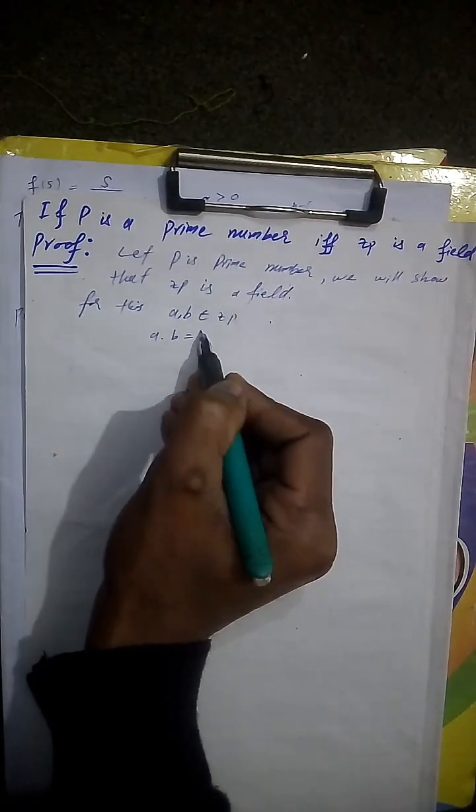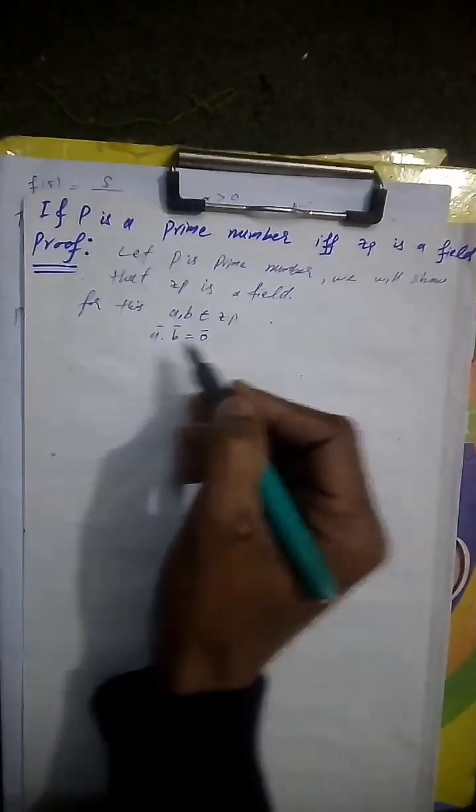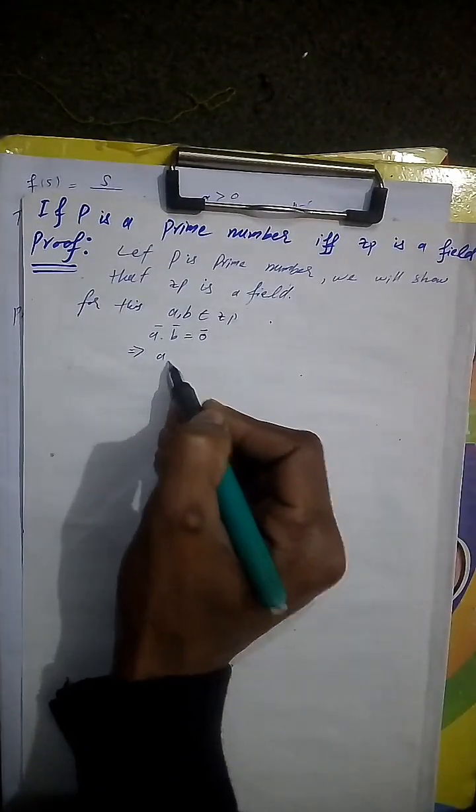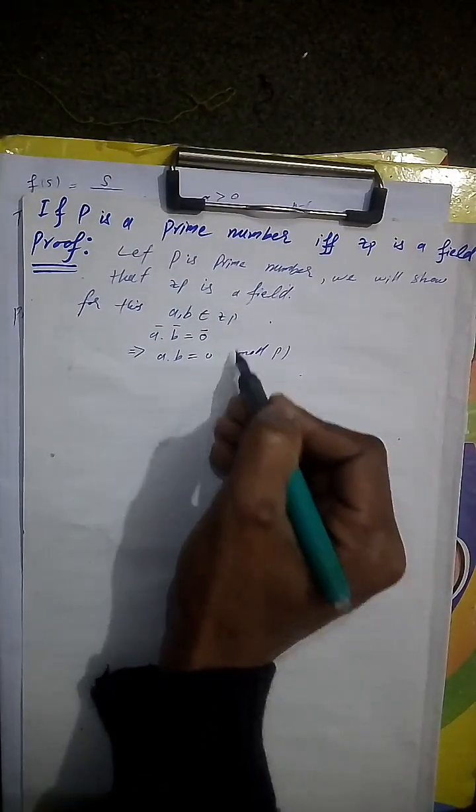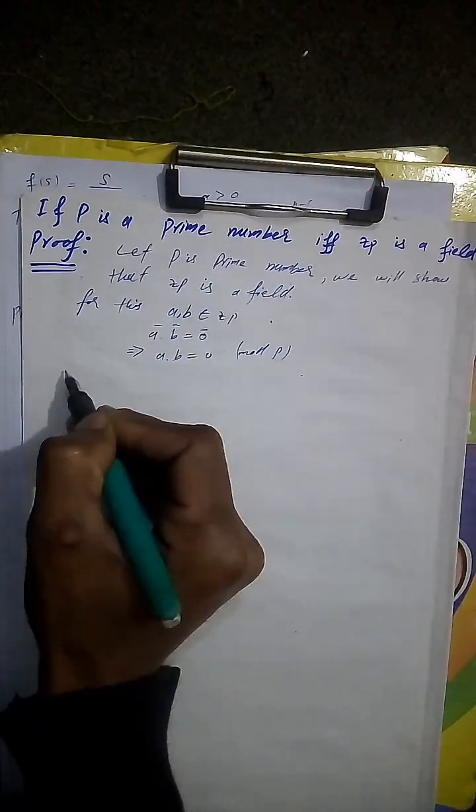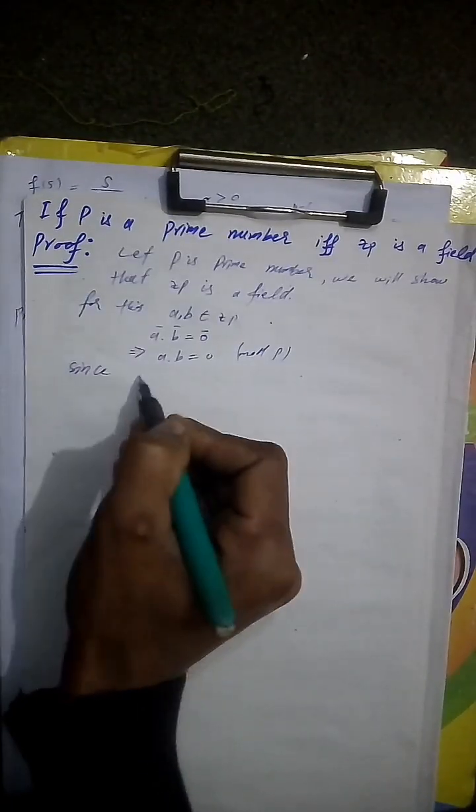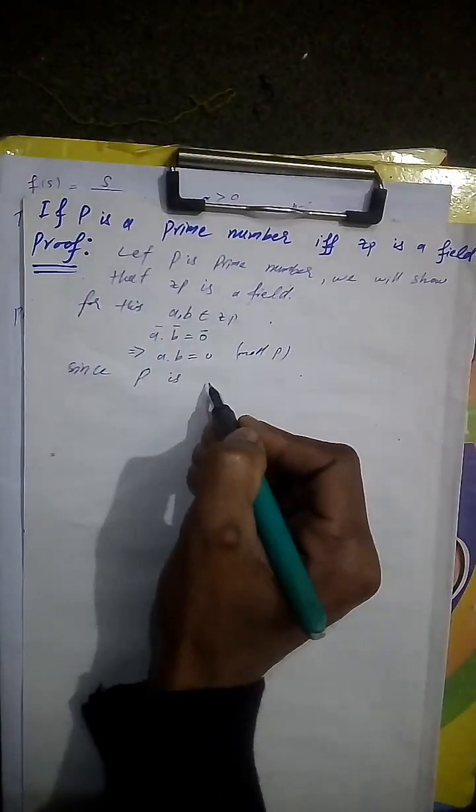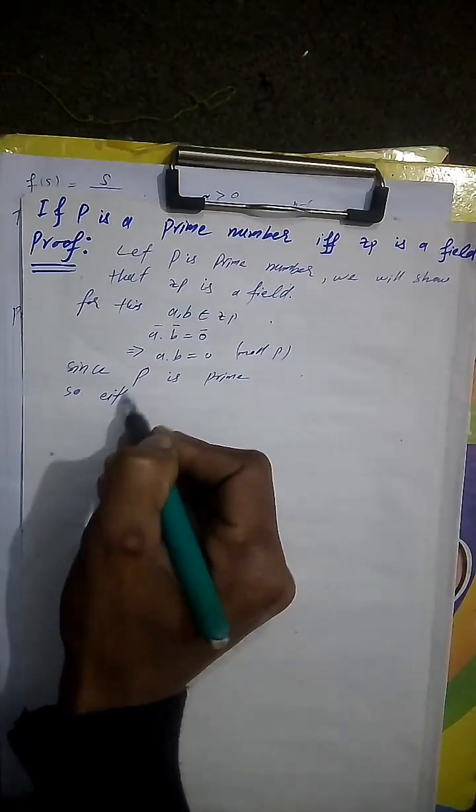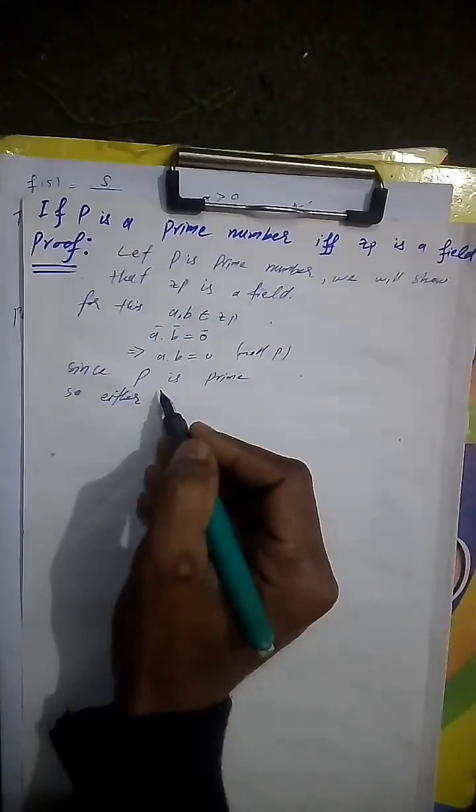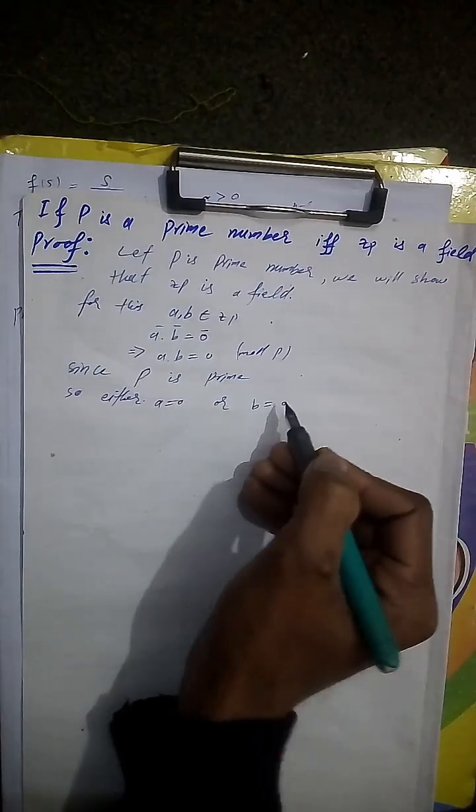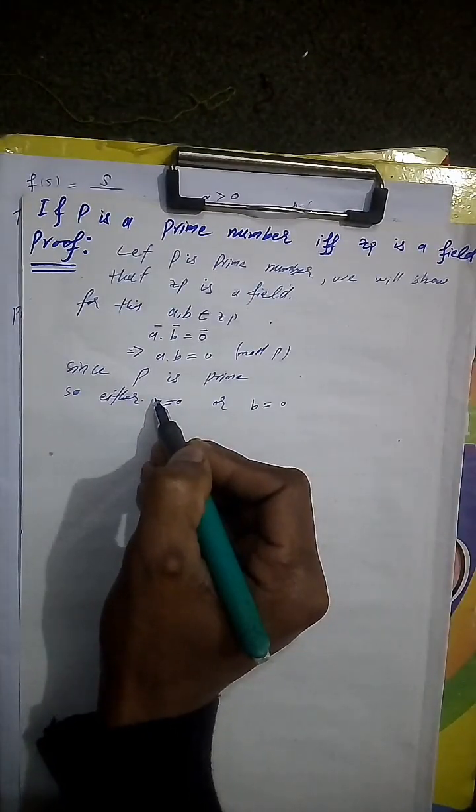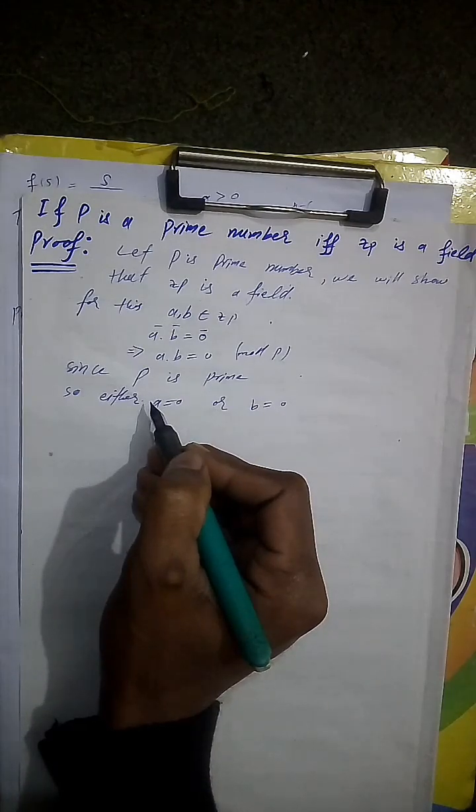A big equal to zero mod p. Apply that a into b equal to zero mod p. P is prime.